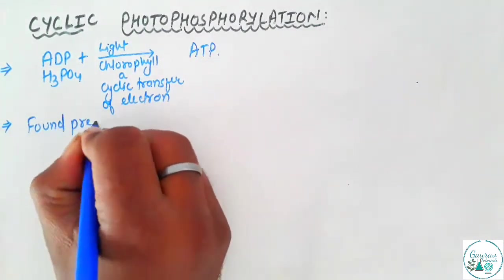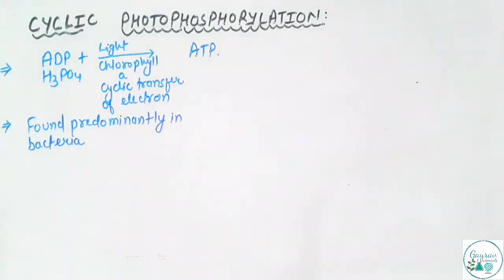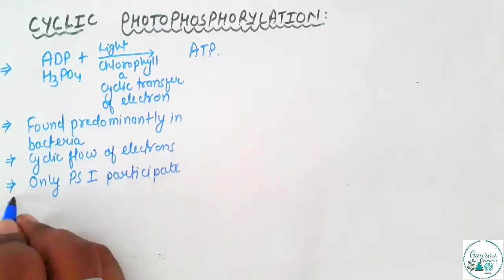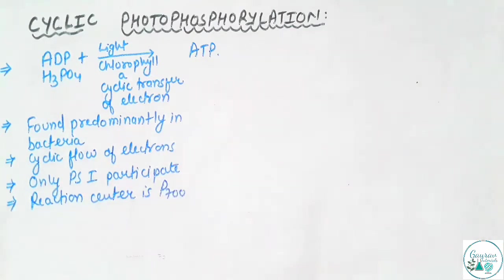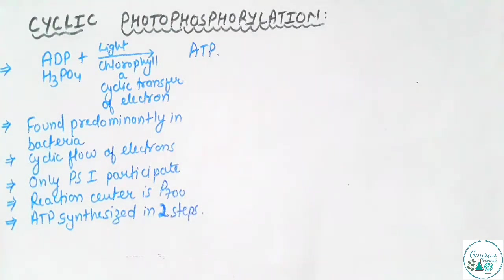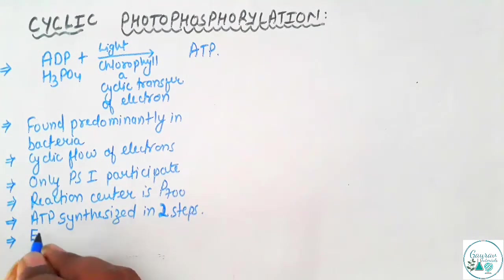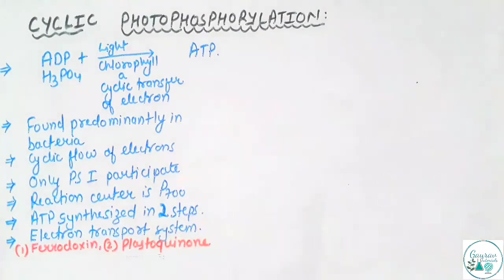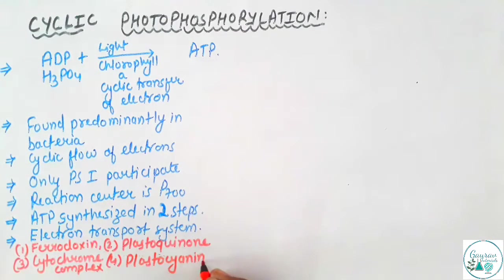This type of event is found predominantly in the case of bacteria. Since there is a cyclic flow of electrons, the process is called cyclic photophosphorylation, with participation of only Photosystem 1, with the reaction center being P700. During this event, ATP is synthesized in two stages where the electron passes through the electron transport system. The electron transport system is a complex of proteins arranged in decreasing order of their redox potential. They are ferredoxin, plastoquinone, cytochrome b complex, and finally plastocyanin.